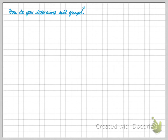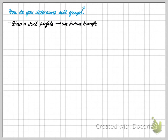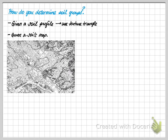So how do you determine the soil group? As discussed previously in class, based on a given soil profile, you can use the texture triangle — available in your textbook and in the handouts. Another method is based on a soils map. If you know your watershed area, you can determine what your soil groups are.